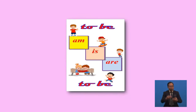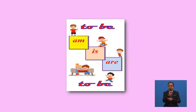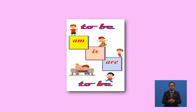The next word is another verb to be: 'are'. 'Are' is the present indicative plural and second person singular of 'be'. The third word is also a verb to be: 'am'. 'Am' is the first person singular present indicative of 'be'.